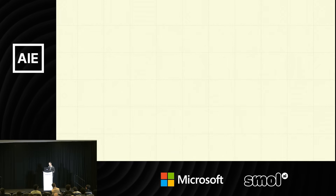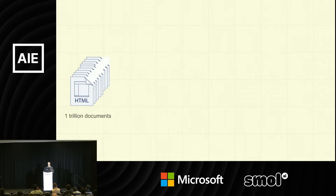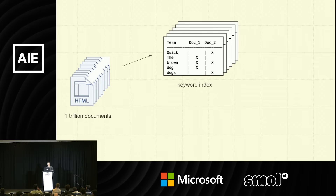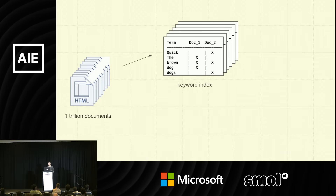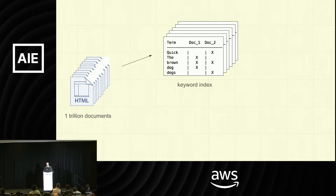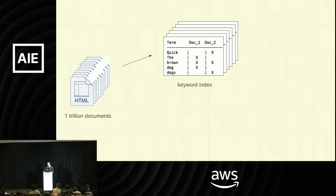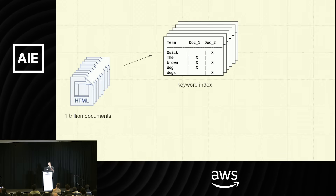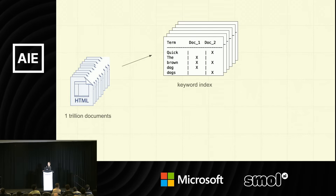The general idea was: what is a search engine? You have a trillion documents on the web. Traditional search engines, on a very high level, create a keyword index of those documents. For each document you ask what are the words in it, and you create this big inverted index where you map from words — like 'brown' — to all the documents that contain that word.